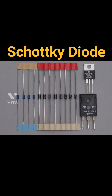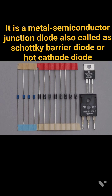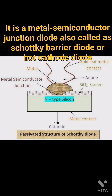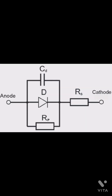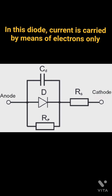Schottky Diode is a metal semiconductor junction diode, also called the Schottky barrier diode or hot cathode. The metal semiconductor junction is called the Schottky barrier. In the Schottky diode, current is carried by means of electrons only.